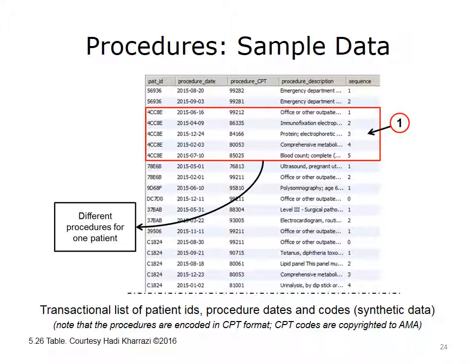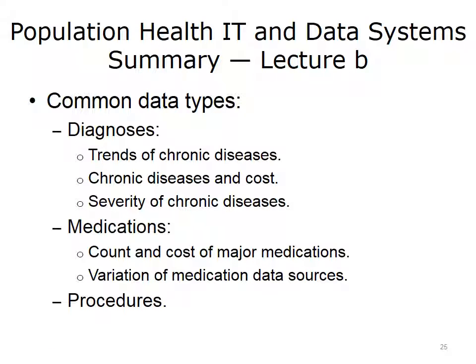This table shows a list of patients and their procedures based on claims data. The table includes synthetic data and is transactional, meaning each patient has a separate row for each rendered procedure. The procedures are encoded in CPT, and the table is sorted by patient ID. Arrow 1 shows that one patient had five different procedures over a span of almost six months. This concludes Lecture B of Population Health IT and Data Systems, covering common data types for population health analytics with a focus on diagnosis, medication, and procedure data types. The diagnosis data type included a discussion on trends of chronic diseases and the relationship of diagnosis and severity with healthcare costs. The medication data type included a discussion of the cost of major prescribed and filled medications and the variation of medication data sources.